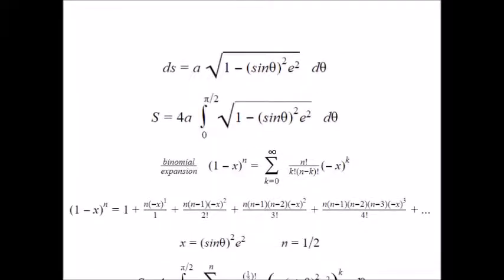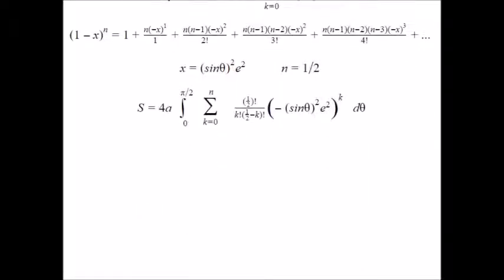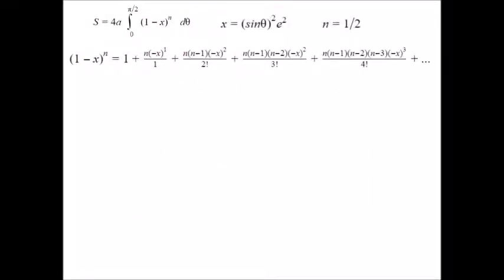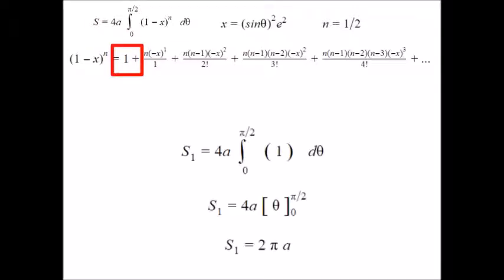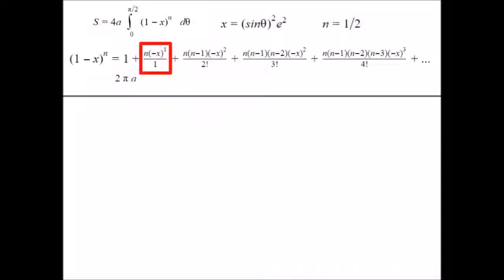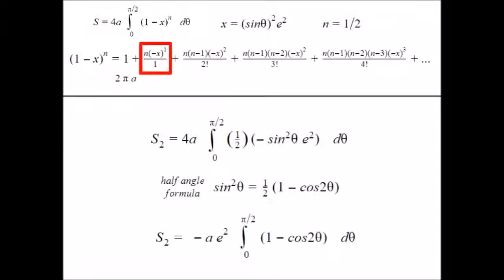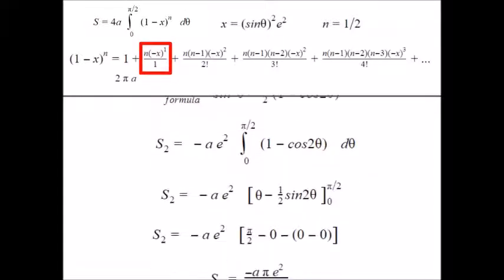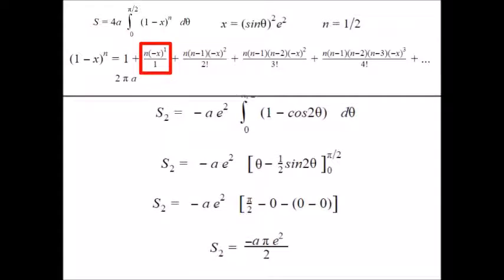So we turn to the binomial expansion. The first five terms anyway. We'll do it one term at a time. Starting with the first. Because that one's easy. You see what we're doing here? Then the second. That one's worse. But with the half angle formula, it's not too bad. Two down.